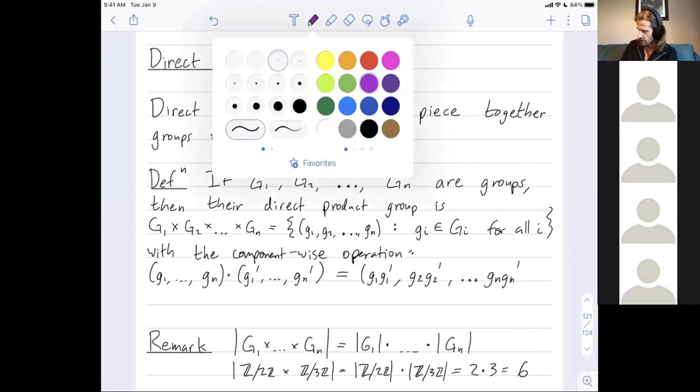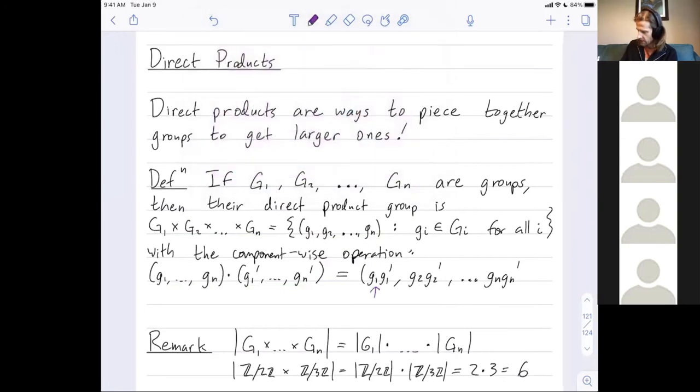This product right here is in G1, this product is in G2, this product is in Gn, and I've just defined this product, this binary operation, which is in the product group. Public questions so far?